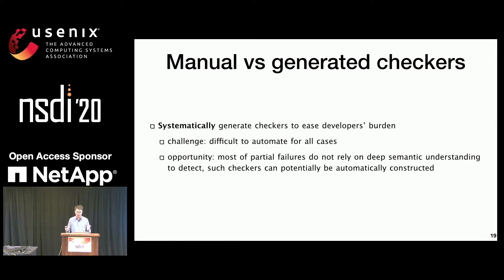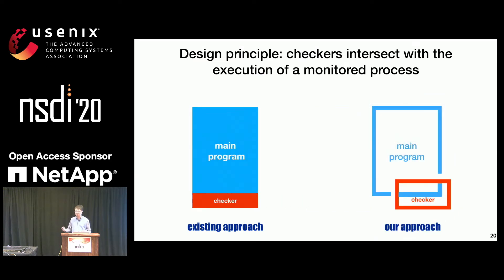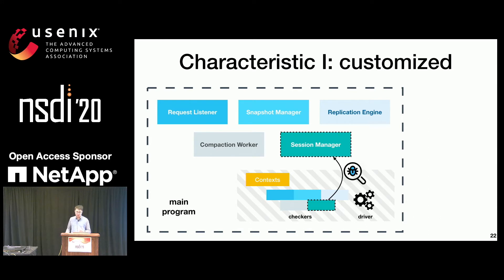Automatic generation to cover all failures is difficult because partial failures have diverse root causes. But we observe that most partial failures do not rely on deep semantic understanding to detect them, so such checkers can potentially be automatically generated. Existing checkers are ineffective because they are very disjoint from the main program. We believe effective checkers should intersect with the execution of the monitored module. We propose an intrinsic software watchdog abstraction. Previously, there are some software watchdogs like Linux watchdog or HTTPD watchdogs, but they are very simple and generic.